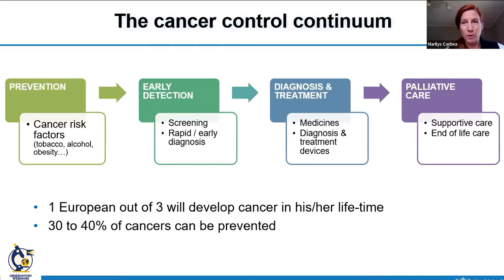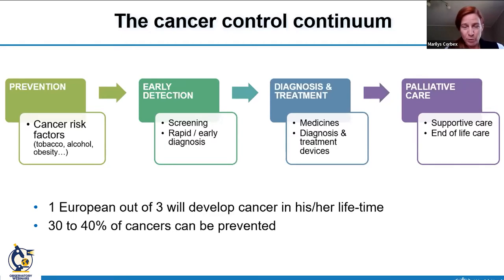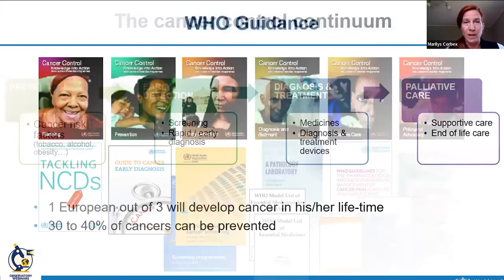Importantly, 30 to 40 percent of cancers can be prevented. Realistically, a third of cancers could be prevented today if well-known, evidence-based policies were in place — but in the EU we see that is not always the case.